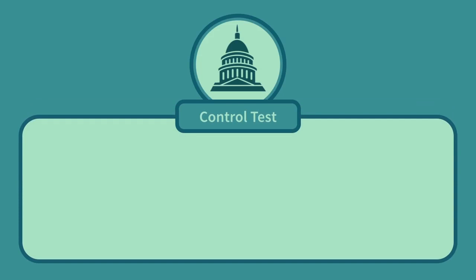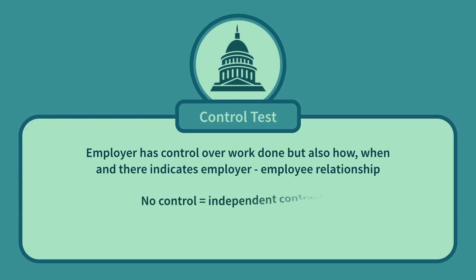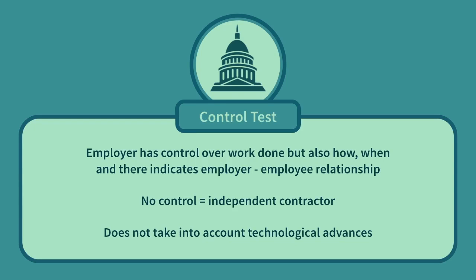The control test: if there is evidence to show that the employer had control not only of what work was done, but also how, when, and where the work was done, this may indicate an employee-employer arrangement. If this control cannot be established, then the worker may be an independent contractor. One drawback of this approach is that as technology and industry have developed, specialised skilled workers are often not under the direct control of their employers due to their unique skills — for example, in the medical profession, when hospital managers are unable to control their surgeons to a great extent.